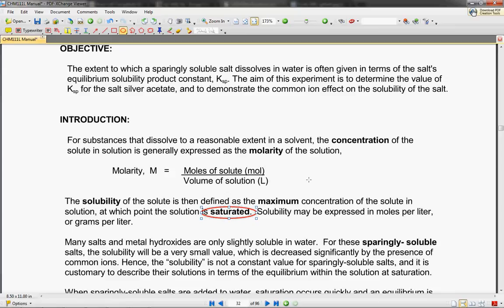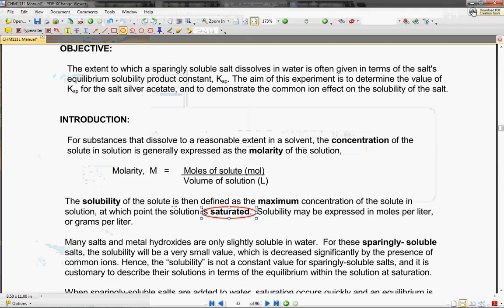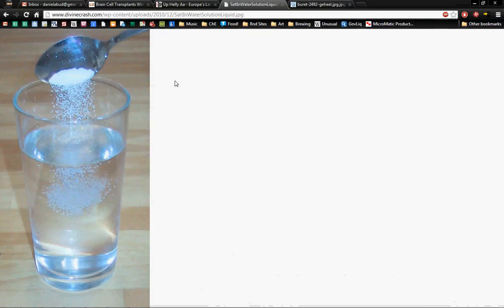So when we have the maximum amount of salt that we can add to water before the rest of the salt just starts piling up at the bottom, our solution is saturated and that will give you the solubility of the solute in that solution. For example, if you add sugar to your coffee, you can add as much sugar as you want but at a certain point it will stop getting sweeter and the sugar will just start piling up at the bottom of your coffee.